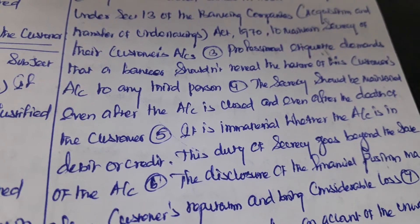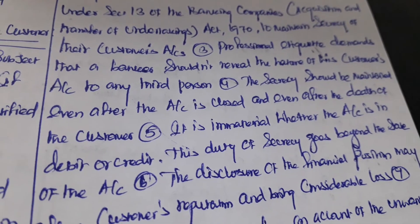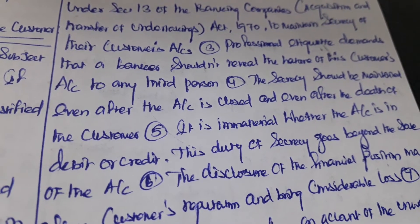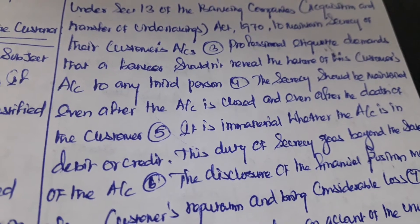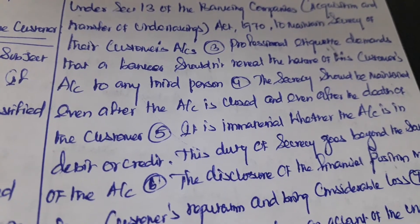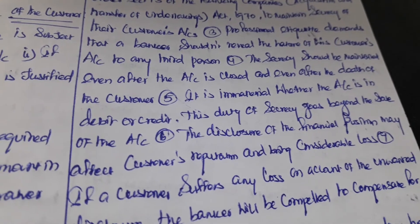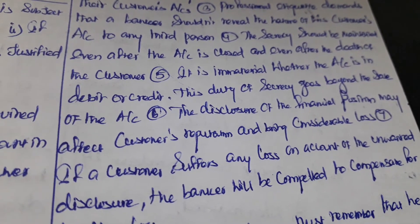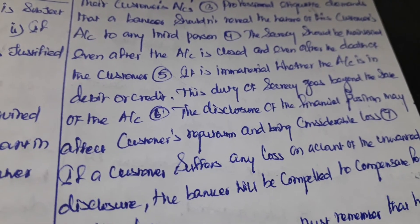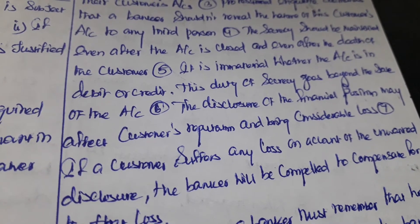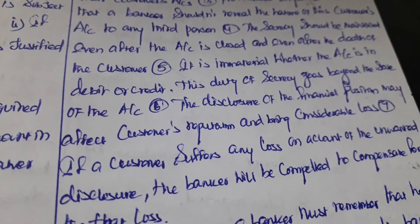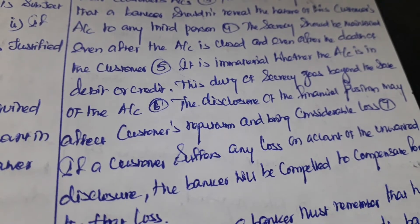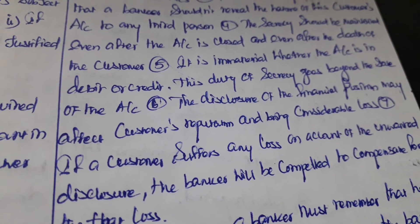The secrecy should be maintained even after the account is closed and even after the death of the customer. Even if a customer has closed his account, or has passed away, the banker should not reveal the customer's details. After closing the account of the customer with zero balance, that also should not be revealed to a third party.